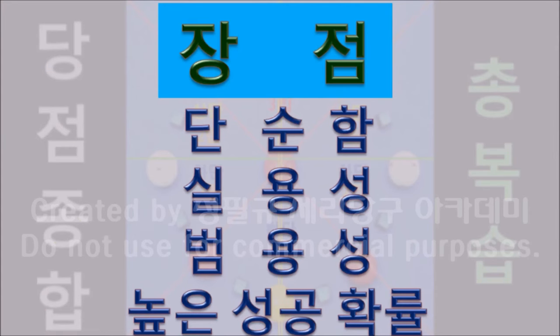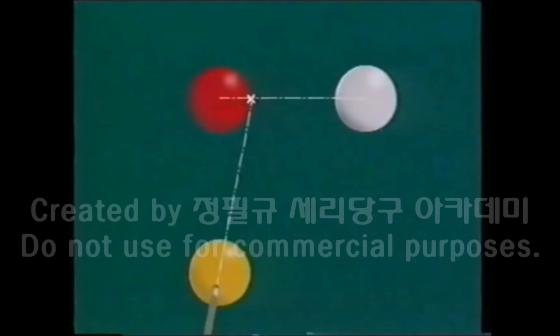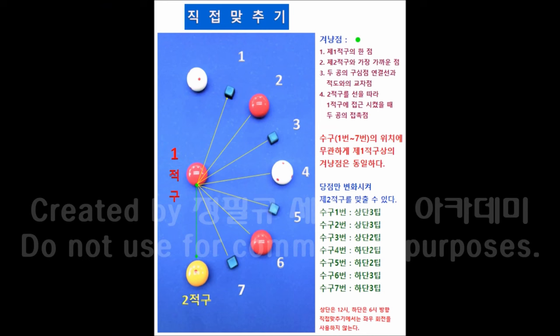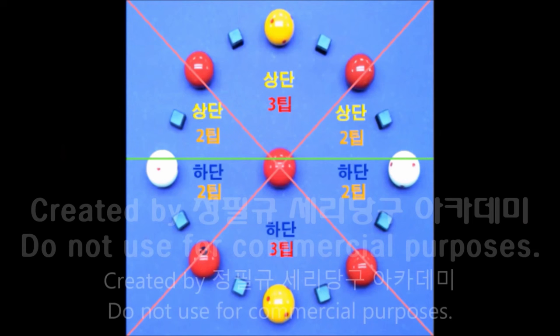본 이론을 간략히 요약하겠습니다. 직접 맞추기 위해서는 수구는 당점을, 1적구는 두께를 정해야 합니다. 두께는 겨냥점으로 볼 수 있고, 당점은 상단·하단 또는 몇 시 방향·몇 팁으로 볼 수 있습니다. 겨냥점은 제1적구와 제2적구가 가장 가까운 지점으로, 7개 수구 위치에 상관없이 한 곳입니다. 수구의 상하단점은 제1적구 기준 남쪽과 북쪽으로 양분하고, 제2적구가 북쪽에 있으면 상단, 남쪽에 있으면 하단을 줍니다.